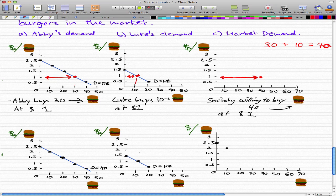At $1.50, Abby is willing to buy 20 burgers, while Luke is still willing to buy zero. So the most that society is willing to buy at $1.50 is 20 burgers.